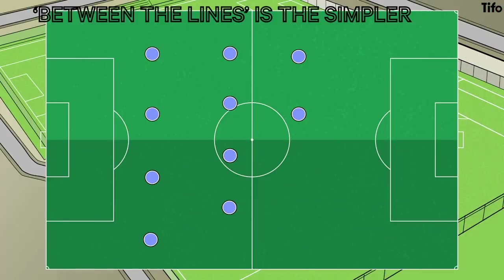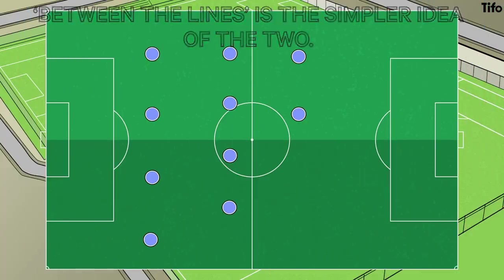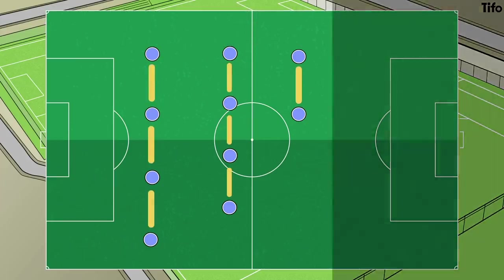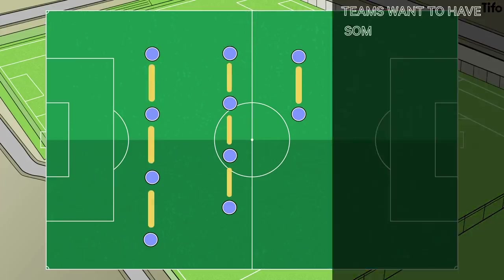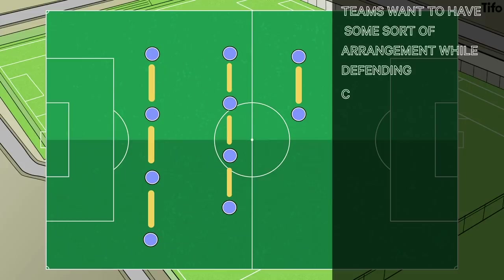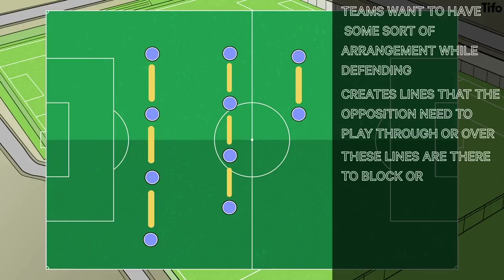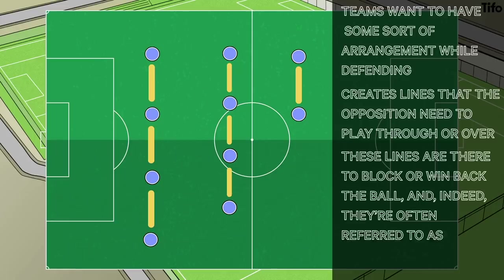Between the lines is the simpler idea of the two. The lines are the position of defence, midfield and attack. Generally, teams want to have some sort of arrangement while defending that creates lines that the opposition need to play through or over. These lines are there to block or win back the ball, and indeed they're often referred to as blocks.